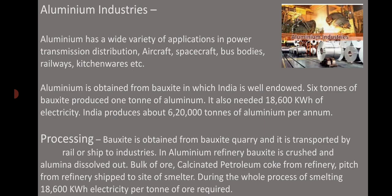The processing begins as bauxite is obtained from a bauxite quarry and transported by rail or ship to industries. In the aluminium refinery, bauxite is crushed and alumina dissolves out from the bulk of ore. Calcinated petroleum coke and pitch from the refinery are also shipped to the site of smelting. During the smelting process, high-grade electricity is required, and finally we get aluminium.